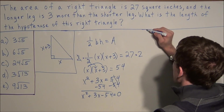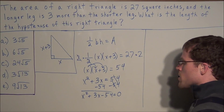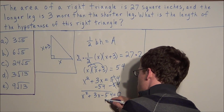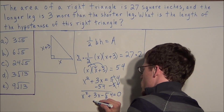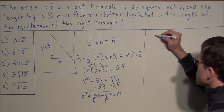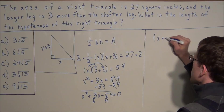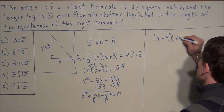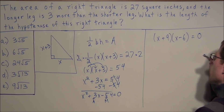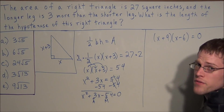Now we want to factor this quadratic equation to find the roots and solve for x. When factoring, we need two numbers that multiply to negative 54 and add up to positive three. Those two numbers are positive nine and negative six. So we factor the left side as (x plus nine)(x minus six) equals zero. A quick check: nine plus negative six is positive three, and nine times negative six is negative 54.